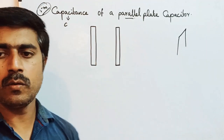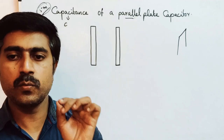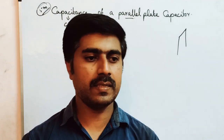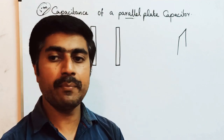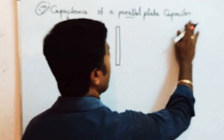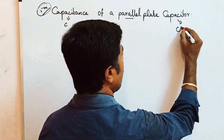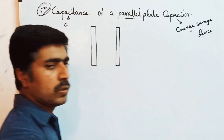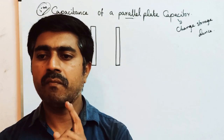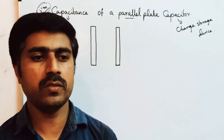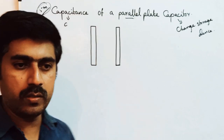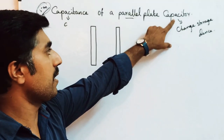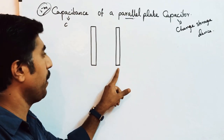Capacitance is denoted by the letter C. It is a constant — one of the characteristics of a capacitor. A capacitor is a charge storage device, just like a bucket is a water storage device. So the capacitor stores charge. Minimum we need two plates: one plate for positive charges and another plate for negative charges. In between, we need to maintain some distance. First, consider a capacitor of two parallel plates kept at a distance D.